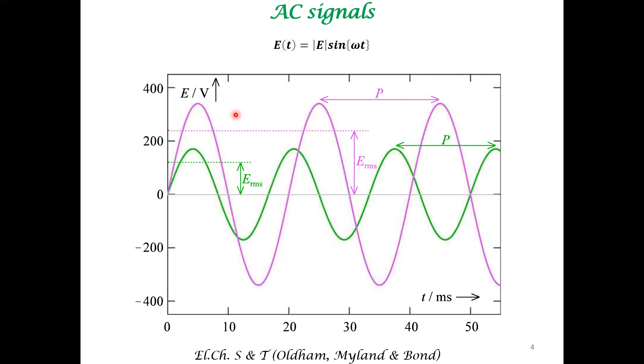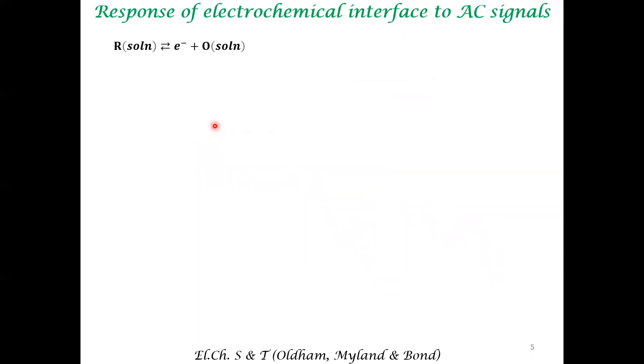However, the magnitude of AC signals we'll be dealing with in EIS is very small compared to this variation. We'll be dealing with just 5 millivolts and so on. So it's a small perturbation to your electrochemical system. And the reason why you have a small perturbation is you want the system to respond in a linear manner.